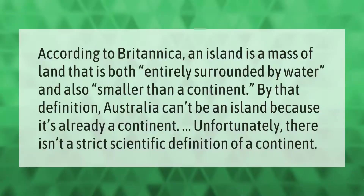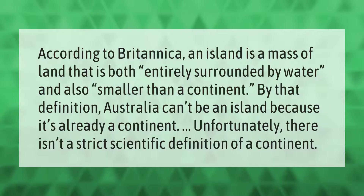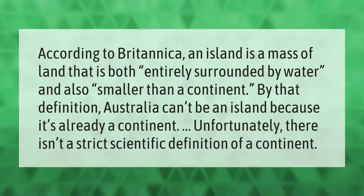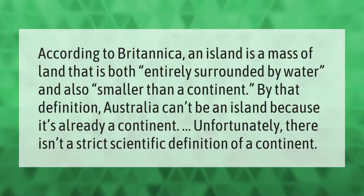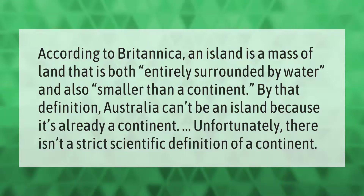According to Britannica, an island is a massive land that is both entirely surrounded by water and also smaller than a continent. By that definition, Australia can't be an island because it's already a continent. Unfortunately, there isn't a strict scientific definition of a continent.